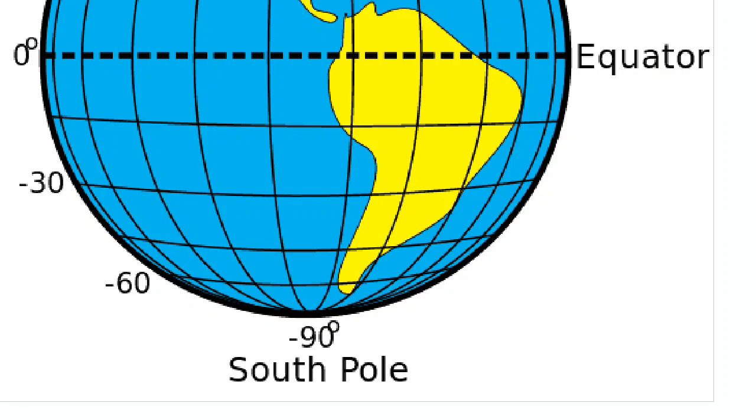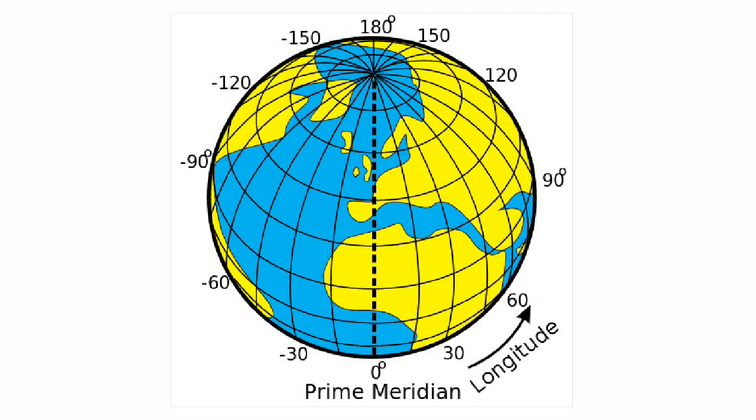Other than the equator, there are other imaginary lines passing through the globe. They are latitudes and longitudes. We will learn about this in the next class.